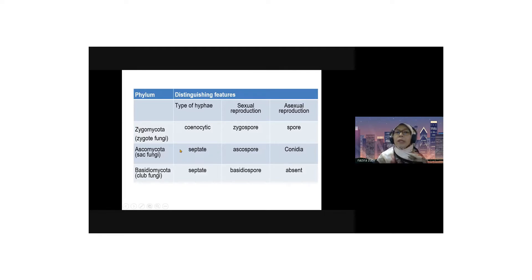You boleh add kat situ monokaryotic, or it consists of two, it can consist of two nucleus which is known as dikaryotic. And it can undergo sexual and asexual reproductions. For sexual reproductions the spores for Ascomycota is known as ascospore.